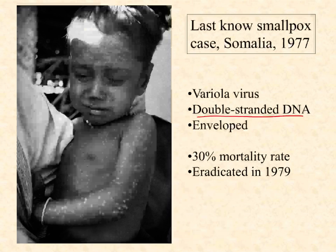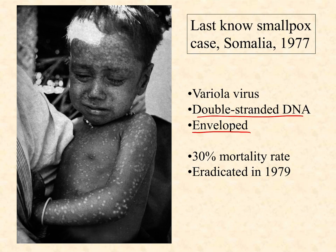It turns out with viruses, you can have all kinds of weird combinations, and we'll talk about those. This is also what we call an enveloped virus. Roughly half of all the viruses that infect people have a little envelope — a phospholipid bilayer membrane wrapped around them. The other half don't; they're non-enveloped viruses. That's another way for us to consider different kinds of viruses.